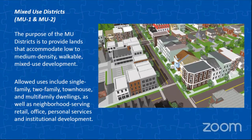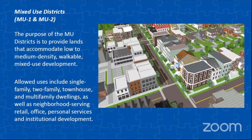Next we'll go over the mixed use districts. The first is lower intensity: mixed use one and two, intended to accommodate low to medium density walkable mixed use development. You can have single family, two family, and low-level multi-family dwellings, but you can also have neighborhood-serving retail, office, and services within these so that people can walk to various services.